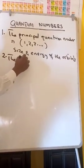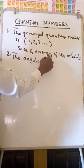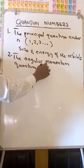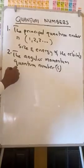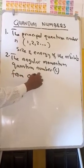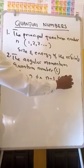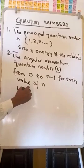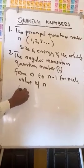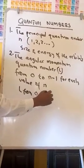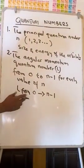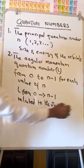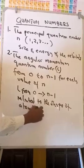The second quantum number we shall look at is the angular momentum quantum number, L. L has integral values from 0 to n minus 1 for each value of n. This quantum number is related to the shape of the atomic orbital.